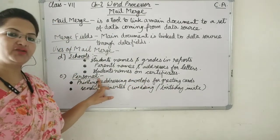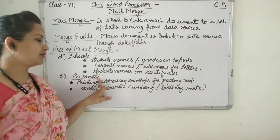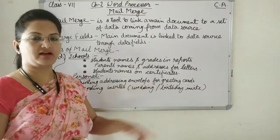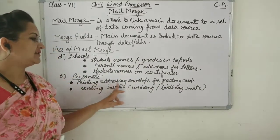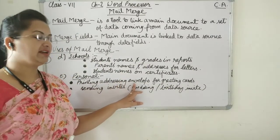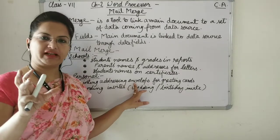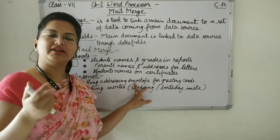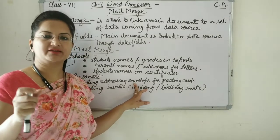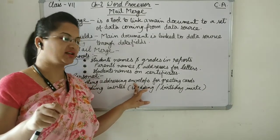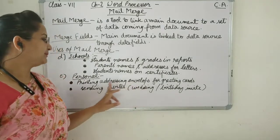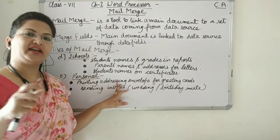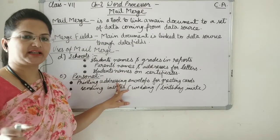For personal use, you can also use Mail Merge for printing and addressing envelopes for greeting cards. If you want to print labels or envelopes, that can also be done — you just need to make slight changes while printing. If a greeting card is there, you can simply change the address on all the greeting cards.